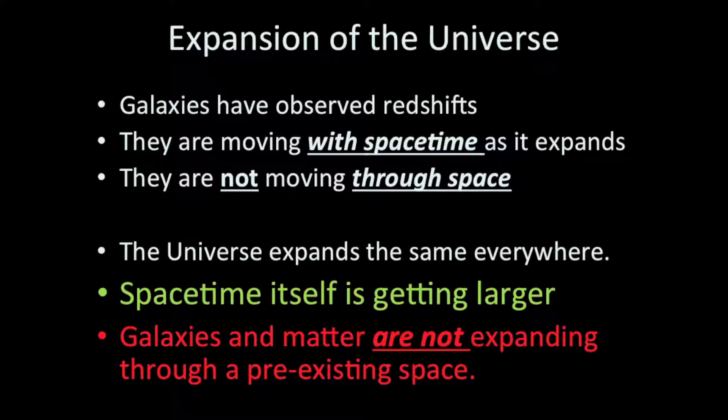We know that galaxies are moving away from us and that if you observed galaxies at any given point in the universe, you'd see the same thing. What we are actually observing is the expansion of space-time itself. Galaxies are moving with space-time as it expands. What's not happening is that the galaxies are moving through space as if they were exploding away from each other, through a pre-existing space.